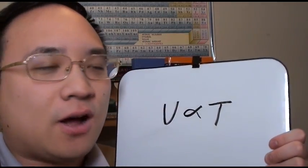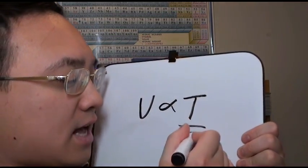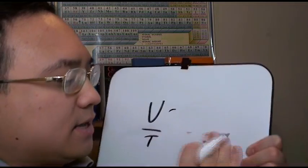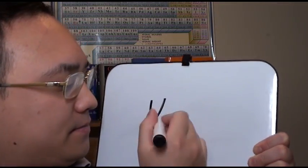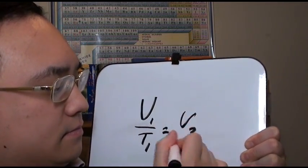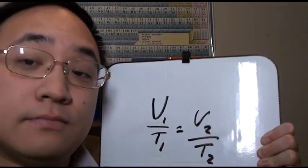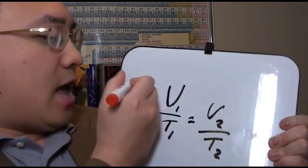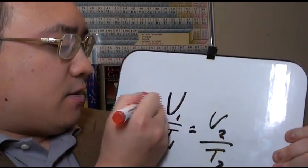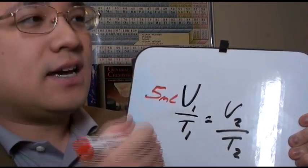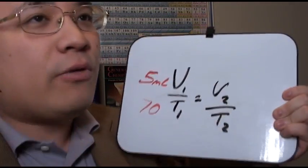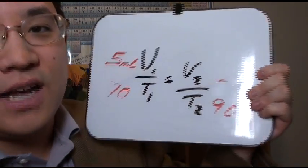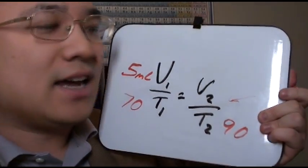So, just like Boyle's law, we're going to turn this into an equation. So, we're going to divide both sides. There you go. So, on a test or a homework, we're going to get a problem where it's like, okay, you have a cup with five milliliters inside of it, and it's 70 degrees in the room. So, what would happen if it was like 90 degrees in the room? How much volume would you get? So, you just cross-multiply and divide, just like before.